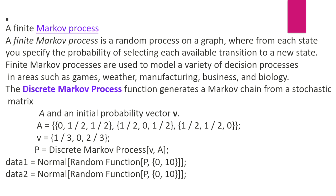Here A is a matrix and V is an initial probability vector. Suppose A equals {{0, 1/2, 1/2}, {1/2, 0, 1/2}, {1/2, 1/2, 0}}, and V equals {1/3, 0, 2/3}.